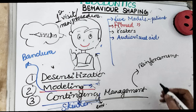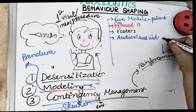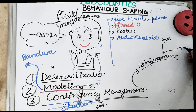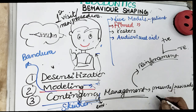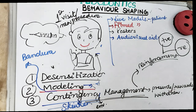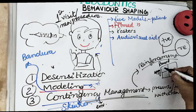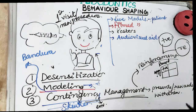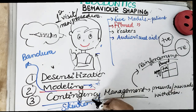Contingency management is a method of modifying the behavior of a child by giving rewards or withdrawing any reinforcement. Positive reinforcement occurs when pleasant consequences follow a response — if a child is rewarded for good behavior during the dental experience. A positive reinforcement is the one whose contingent presentation increases the frequency of the behavior.